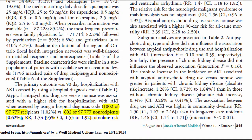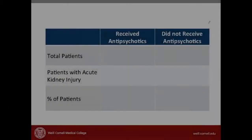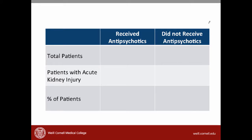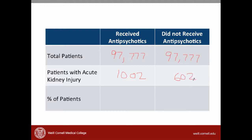We now have enough information to start making some estimates of the harm. I've created a table to help us understand these results. We know that 97,777 patients received the antipsychotics and the same number did not. There were 1,002 patients who had kidney injury in the group that received the antipsychotics and 602 patients who had kidney injury in the group that did not receive the antipsychotic — representing 1.0% and 0.6% of patients respectively.